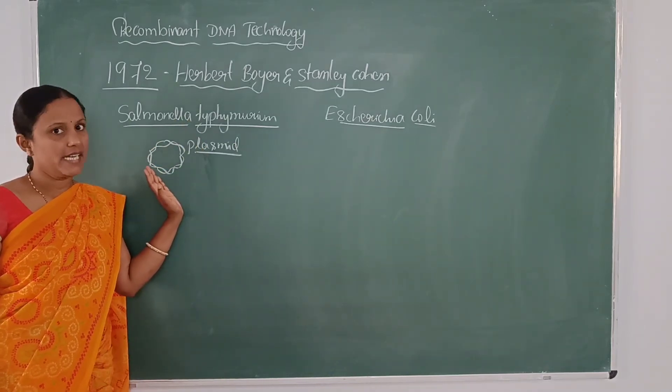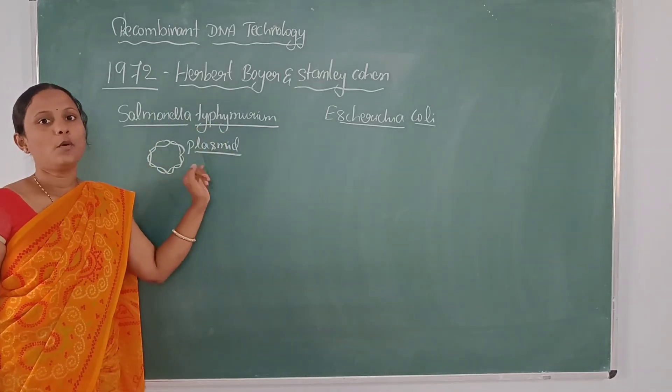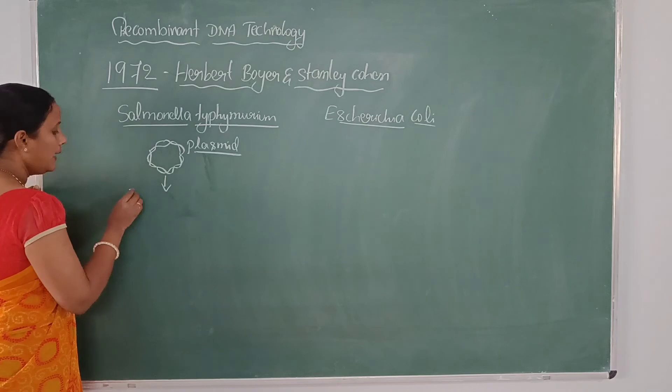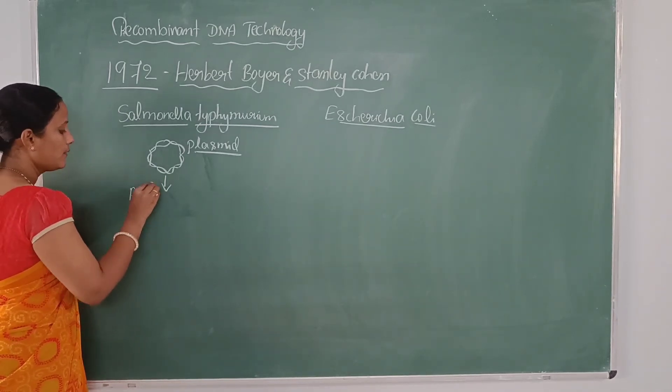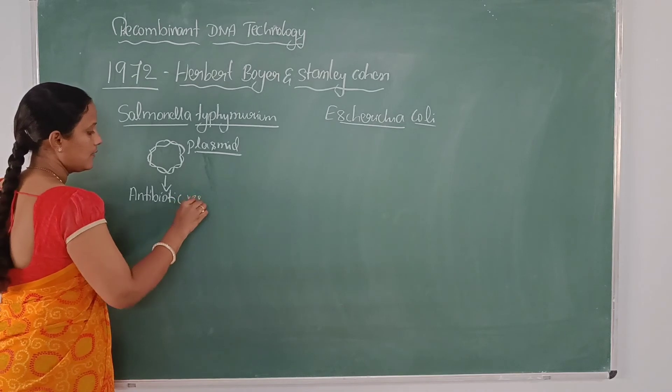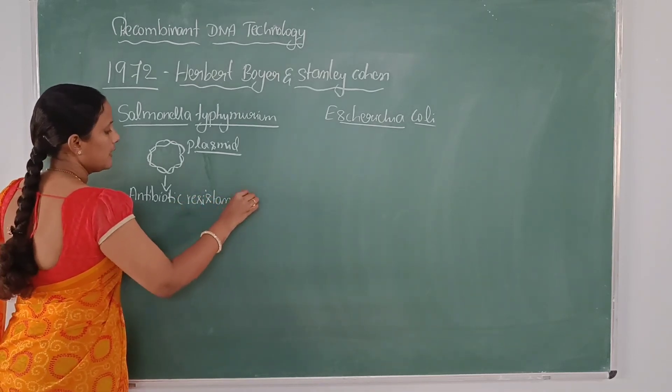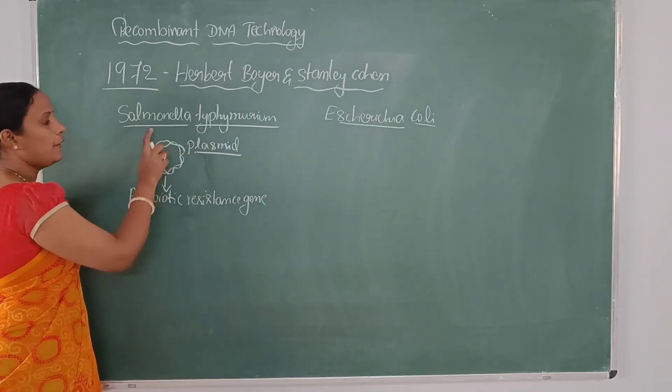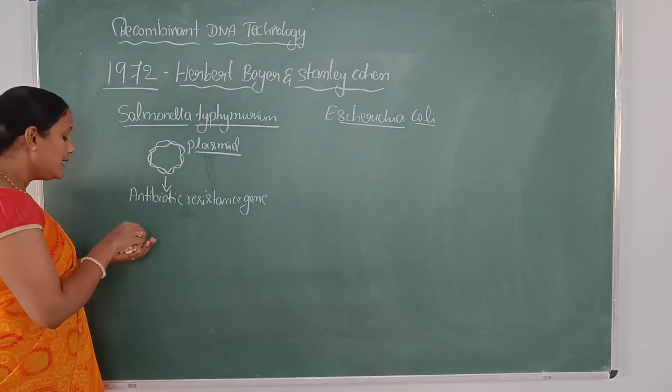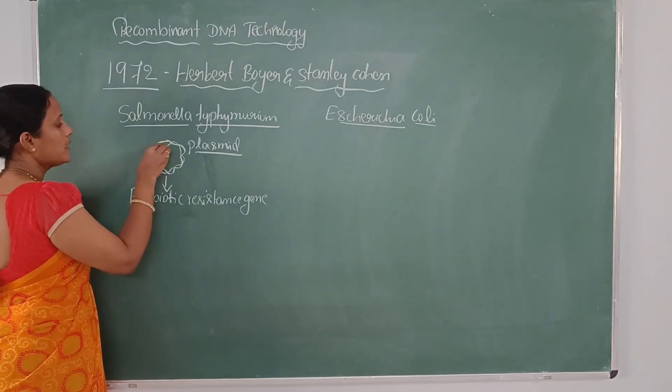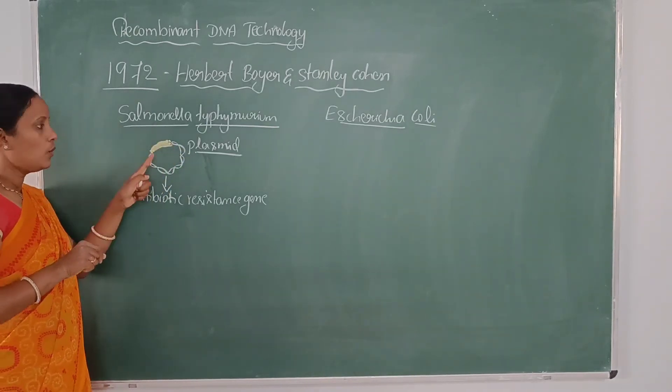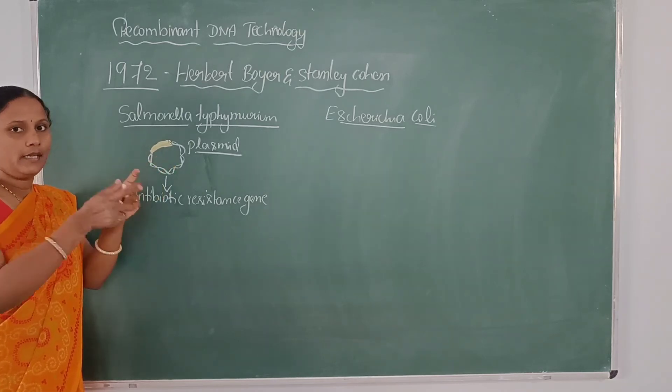It also has many genes in it. In the plasmid of Salmonella typhimurium, they isolated from this plasmid an antibiotic resistance gene. For example, here there is a presence of antibiotic resistance gene along with the plasmid. They have to separate it from this plasmid and take it out.